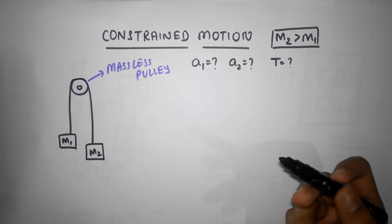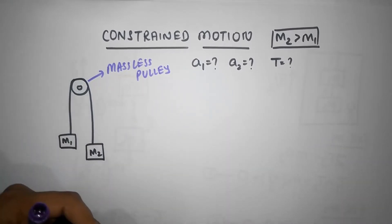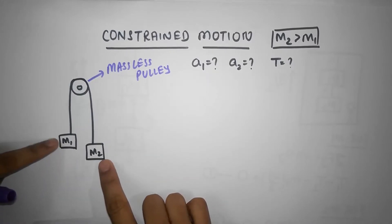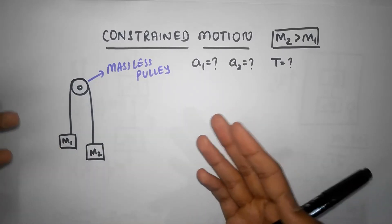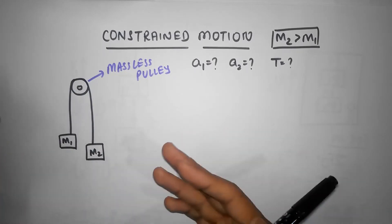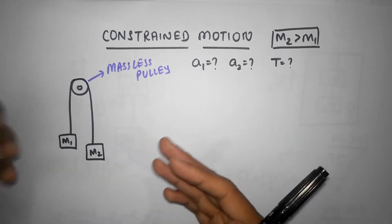So there are three variables which I have. Let's begin. Now in this example, I know M2 is going to accelerate down and M1 is going to accelerate up, right?